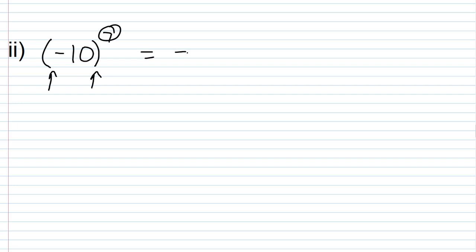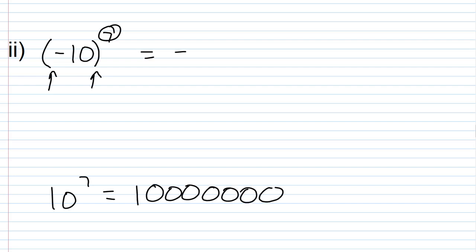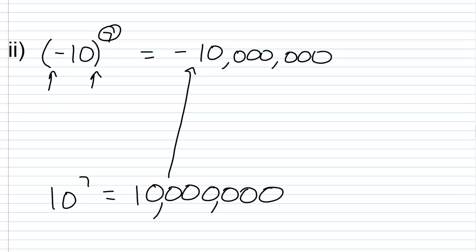For part two we have (-10) to the seventh power, with parentheses around the base. Seven is odd, so the answer is negative. For base 10, I can ignore the negative sign for the computation: 10 to the seventh power is a 1 followed by seven zeros — 10,000,000. So the answer is negative 10 million.